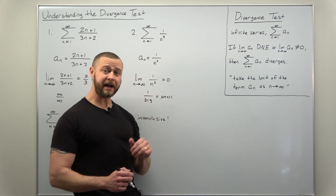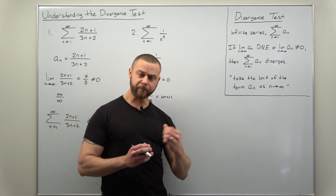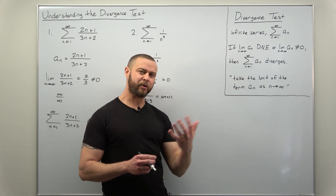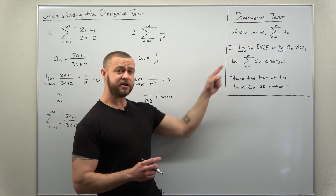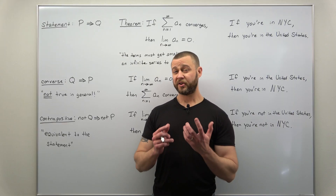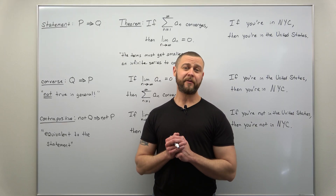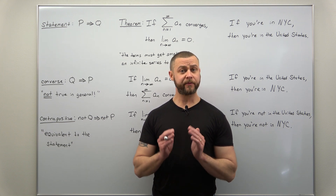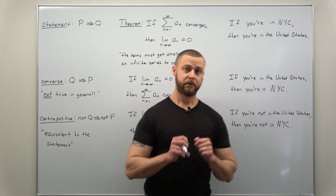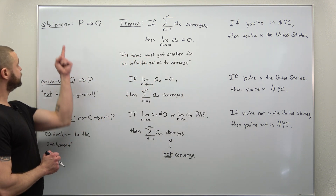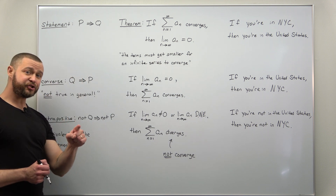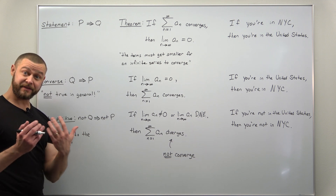Now let's get into what the divergence test does and doesn't tell you. To really understand this, we'll look at it from the point of view of a mathematical theorem or logical statement. We start with the basic form of a logical statement: p implies q, where p is the conditions and q is the conclusion.